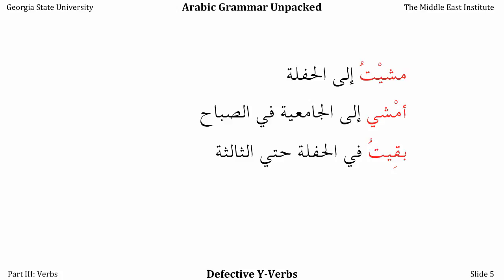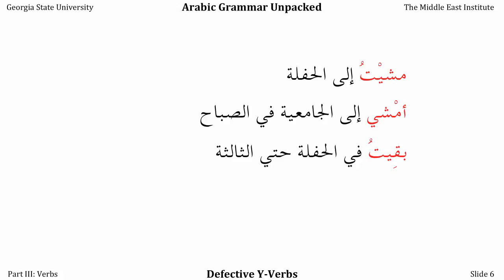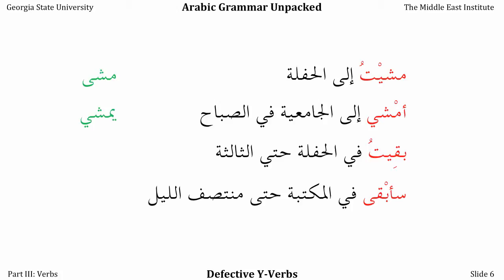But then we have the verb baqiyah, 'to remain.' Baqeitu — not baqeitu — fil hafla hatta al-thalitha. And sa'abqa / nat'abqee fil maktaba hatta muntasaf al-layl. So there are really two kinds of these verbs. The first one, masha yamshi, uses alif maqsura or YA with sukun in the past tense and uses the letter YA in the present tense. The second type, baqiyah, uses YA in the past tense and alif maqsura in the present tense.